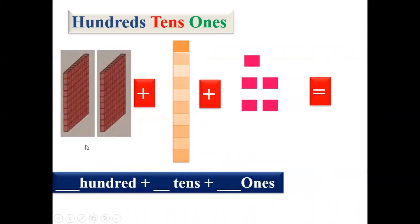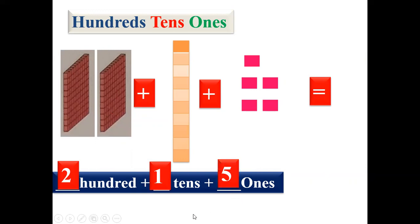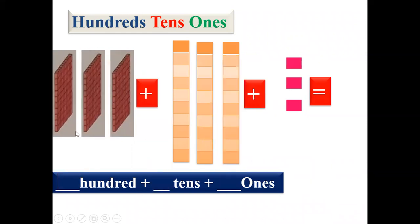Now look at the next one. Here we can see two blocks of hundreds, so we'll write two. And here we can see only one column for tens, so we'll write one. Now let us count the ones: one, two, three, four, five — five ones. So we'll write five. The number is two hundred, one ten and five ones — that is two hundred and fifteen.